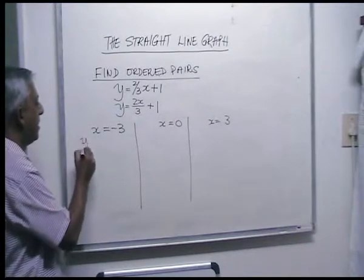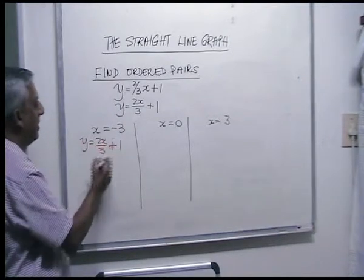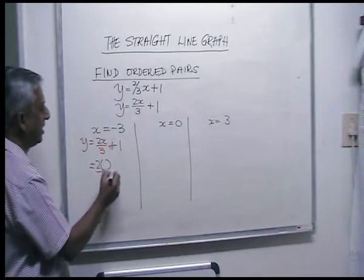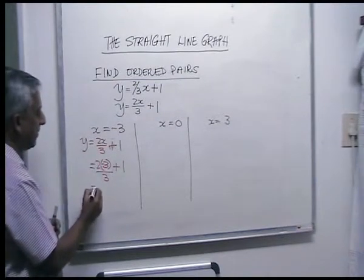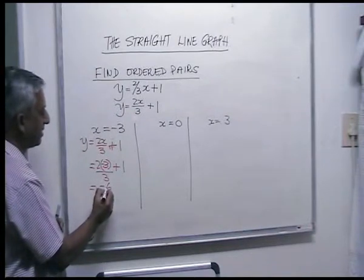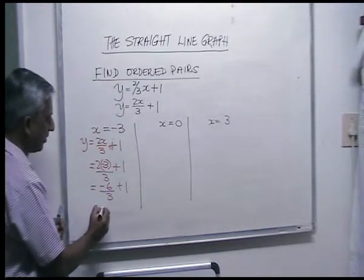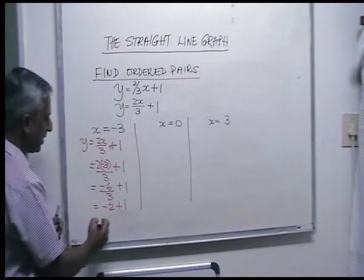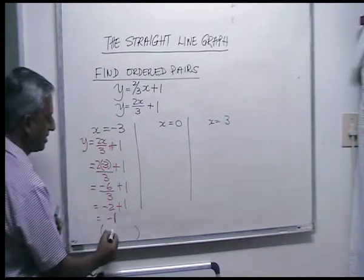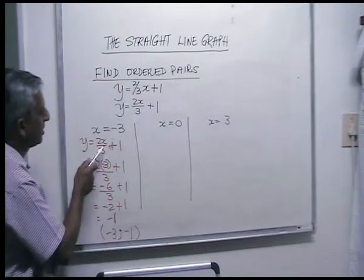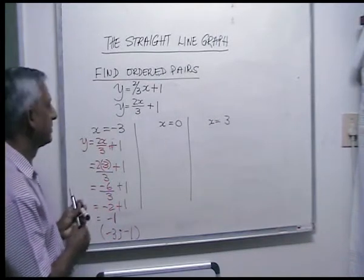For x is minus three: y is equal to two x over three plus one, so two times minus three is minus six over three, plus one. Minus six over three gives you minus two, plus one gives you minus one. Your ordered pair is minus three, minus one. By choosing minus three, you didn't end up with any fractions.